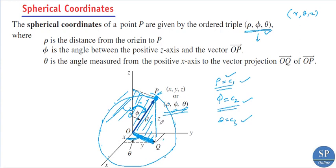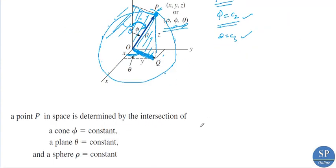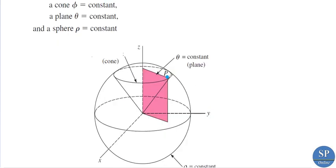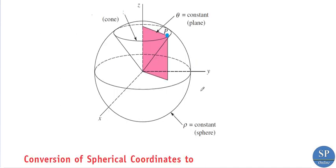So the three surfaces are: ρ = c1 is a sphere, φ = c2 is a cone, and θ = c3 is a plane. In spherical coordinates any point P in 3D space can be determined by the intersection of these three surfaces. If we think of it in 2D, in 3D it is a sphere.